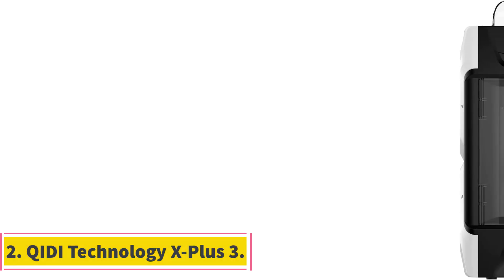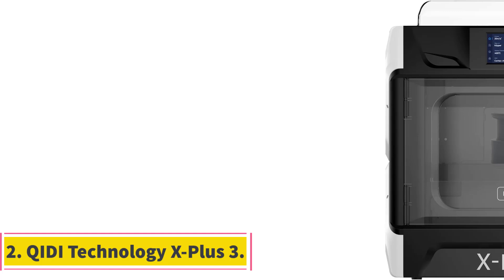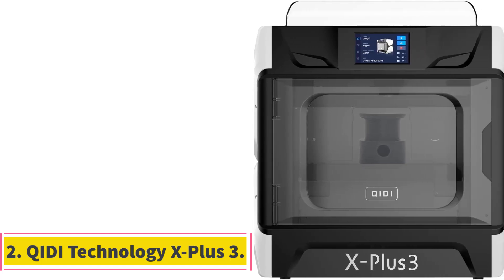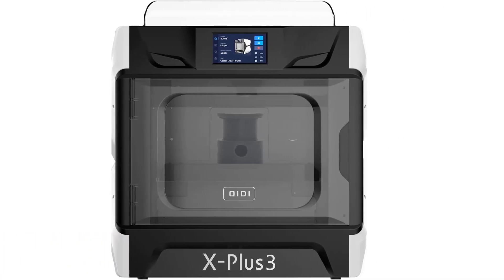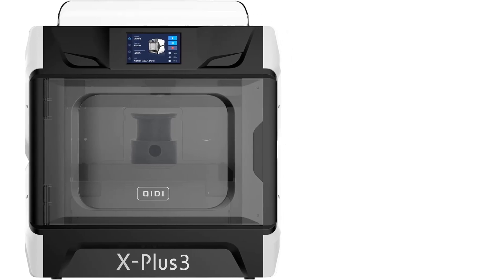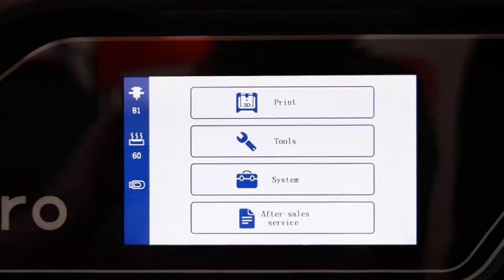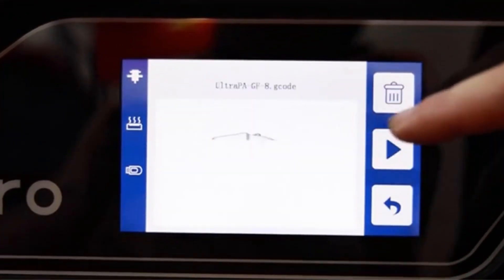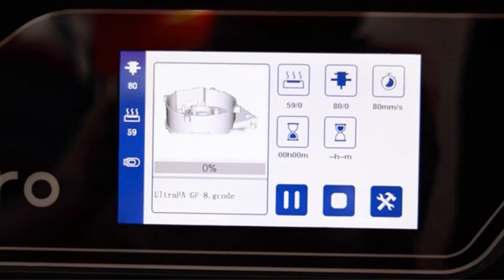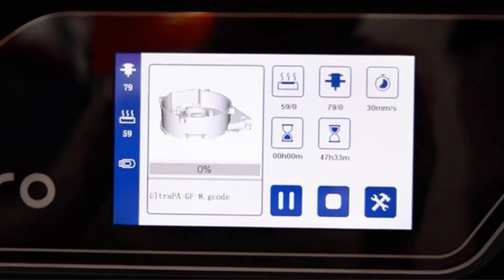Number 2: Qidi Technology X Plus 3. With a super sturdy aluminum frame and assisted leveling, you'll need an earthquake to jostle the X Plus 3 mid-print. We named it as one of the best ABS 3D printers due to its high print speeds and capacity for high temperatures, though you'll need a separate specialist nozzle for carbon fiber.